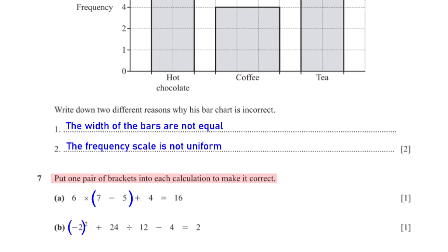Put one pair of brackets into each calculation to make it correct. To make this correct, we put a pair of brackets around 7 minus 5. 7 minus 5 is 2, so 6 times 2 plus 4 gives us 16. To make the next one correct, we put a pair of brackets around negative 2.